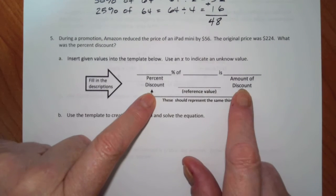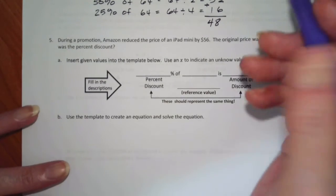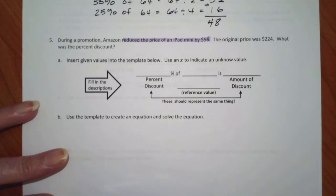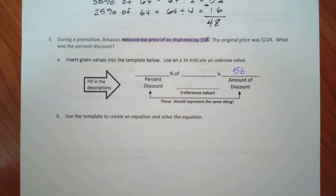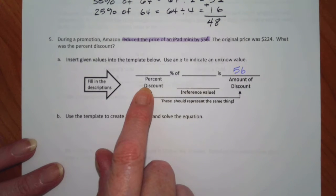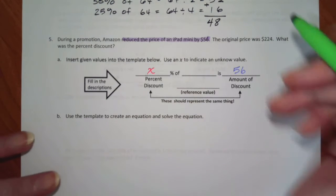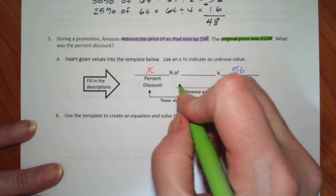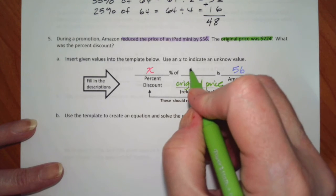We know that the discount and the percent of the discount go together. The discount, the reduced price by $56, which means that the amount of the discount is $56. So I know that this has to be the percent of a discount. It doesn't give me a percent, so this is what I'm going to be looking for, which means that what goes in the middle here is our original price, and that is $224.